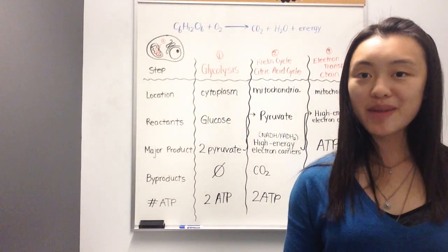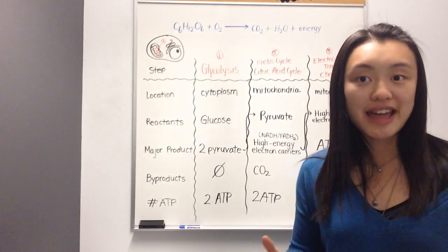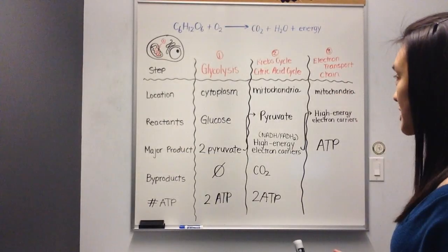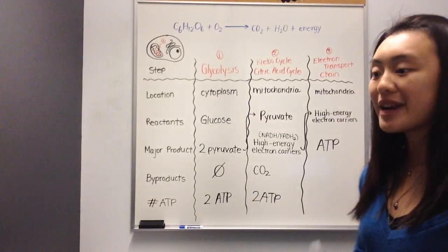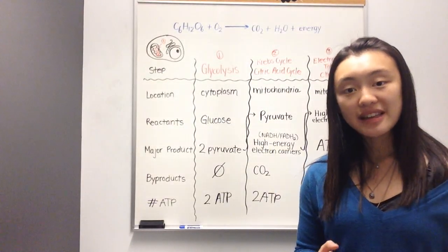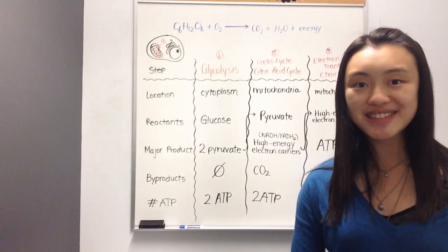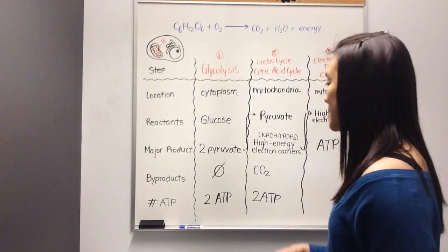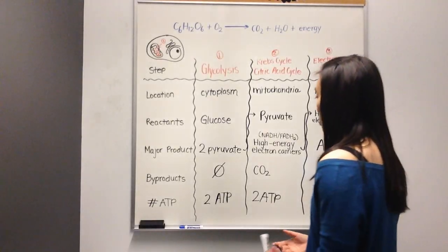You might remember from chemistry class that the most electronegative atom that we look at in this reaction is oxygen. Oxygen is the final electron acceptor. When it accepts the electrons, it also accepts two protons or two hydrogen ions. When this happens, you have an oxygen and two hydrogens, you produce water.